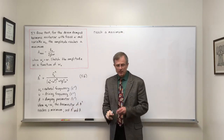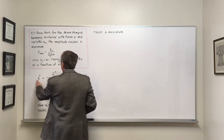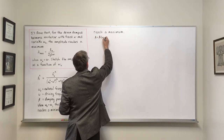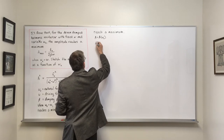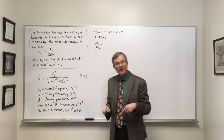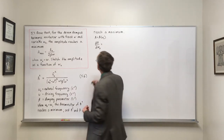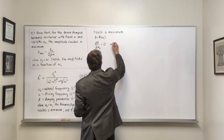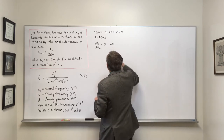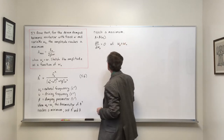There is a more mathematically rigorous way of proving this. If you treat A as a function of omega naught and take the derivative dA/d(omega naught) and set it to zero, that gives you either a maximum or a minimum. Working through that derivative — a good exercise — shows that it occurs when omega naught equals omega, which is another way of proving the same result.